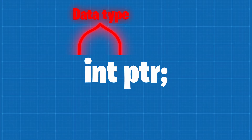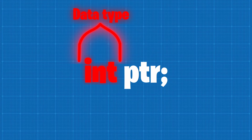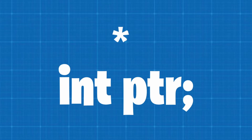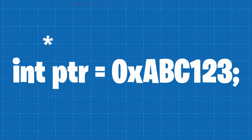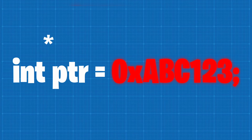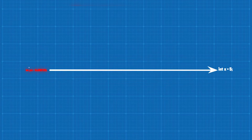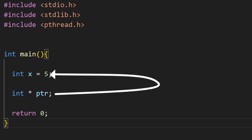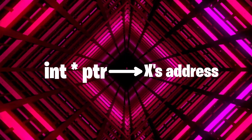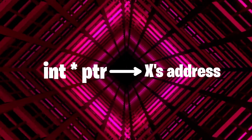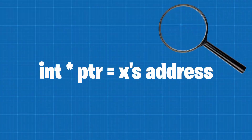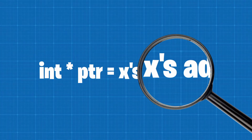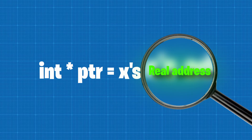To create the pointer, we first give the data type of which the pointer is pointing to, and then add an asterisk. This tells the program that the value the pointer holds isn't actually a value that we want, but rather the address of a value somewhere else. Now let's say that we want to make this pointer point to the value of the variable x. This means that we need to assign the address of the x variable to the pointer. The program will then see that it is a pointer by the asterisk, and check if the value of the pointer is a real location.